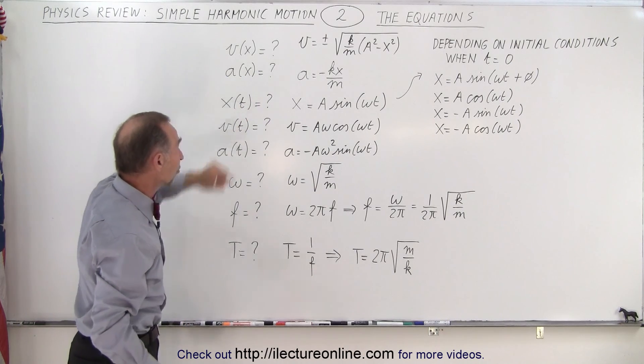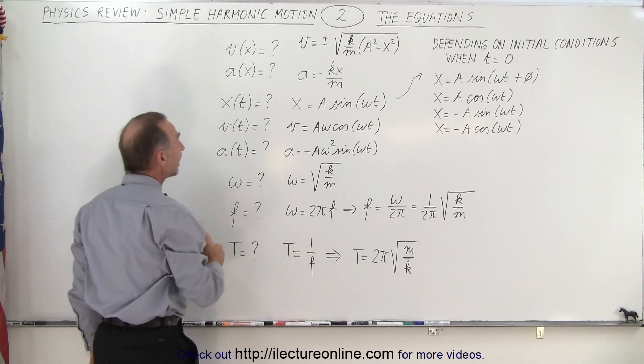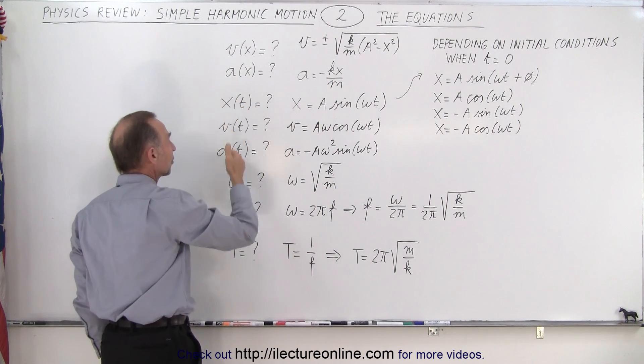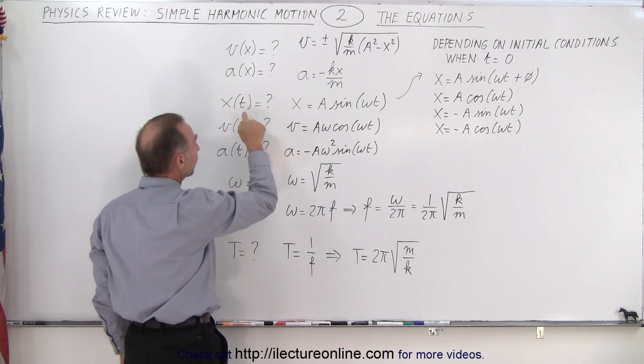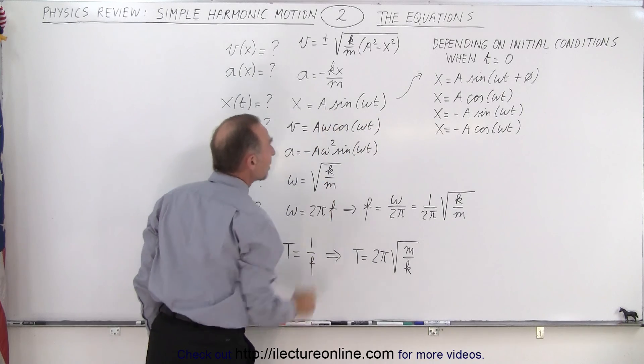The acceleration as a function of position can be found by taking minus kx over m. And then, the position, velocity, and acceleration as a function of time, well, starting with the position equation as a function of time, it is equal to a times the sine of omega t.